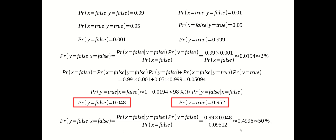What this example is telling us is that the prior used in the Bayesian calculation plays a very important role in the final result of the posterior. It's not just the conditional probability — the likelihood — that controls the result. It's the combination of both: the likelihood and the prior.